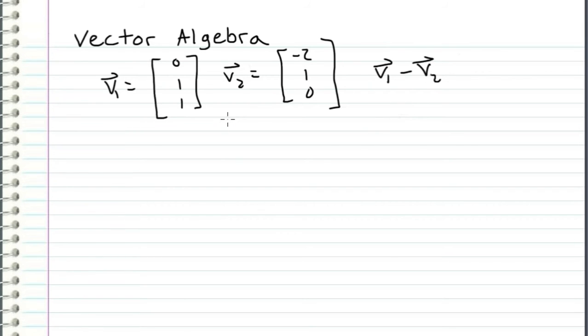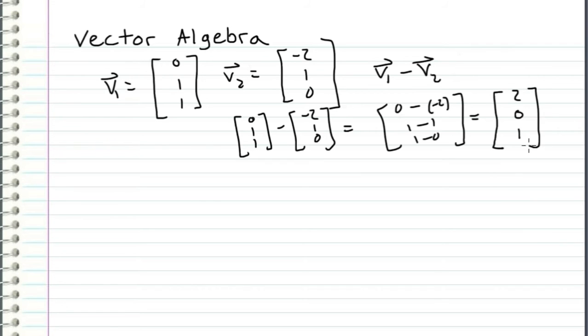And we can do this algebraically pretty easily by just taking the components and subtracting them across the rows, which will give us [0 - (-2), 1 - 1, 1 - 0]. And keep in mind that I am using a subtraction operator between all these numbers because I am subtracting. So when we evaluate these expressions, we get [2, 0, 1].